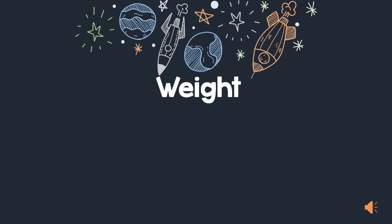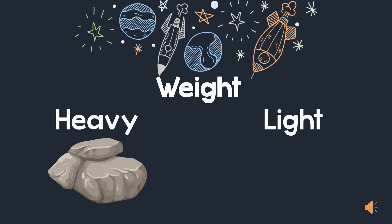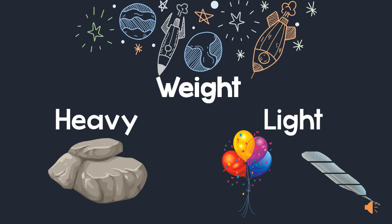Weight is a word used to describe how light or heavy an object is. A heavy object is an object that is more difficult to carry — think about big rocks, do you think they are easy to carry or difficult? A light object is an object that is very easy to carry. Think about a balloon or a feather — it's usually quite easy.